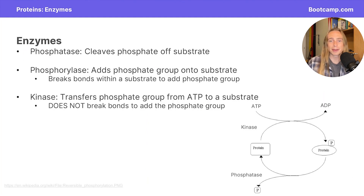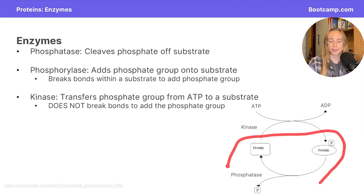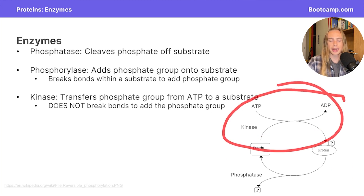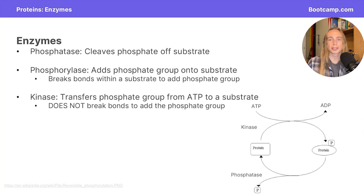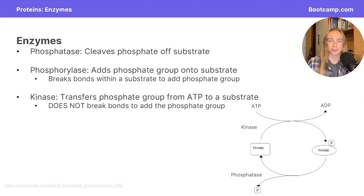Here we have three examples of enzymes that might be useful to know. A phosphatase is an enzyme that cleaves a phosphate group off a substrate. A kinase utilizes a phosphate group from ATP and adds it onto a substrate without breaking any bonds on the substrate. A phosphorylase is similar to a kinase, except that it breaks bonds within a substrate to add a phosphate group onto it.